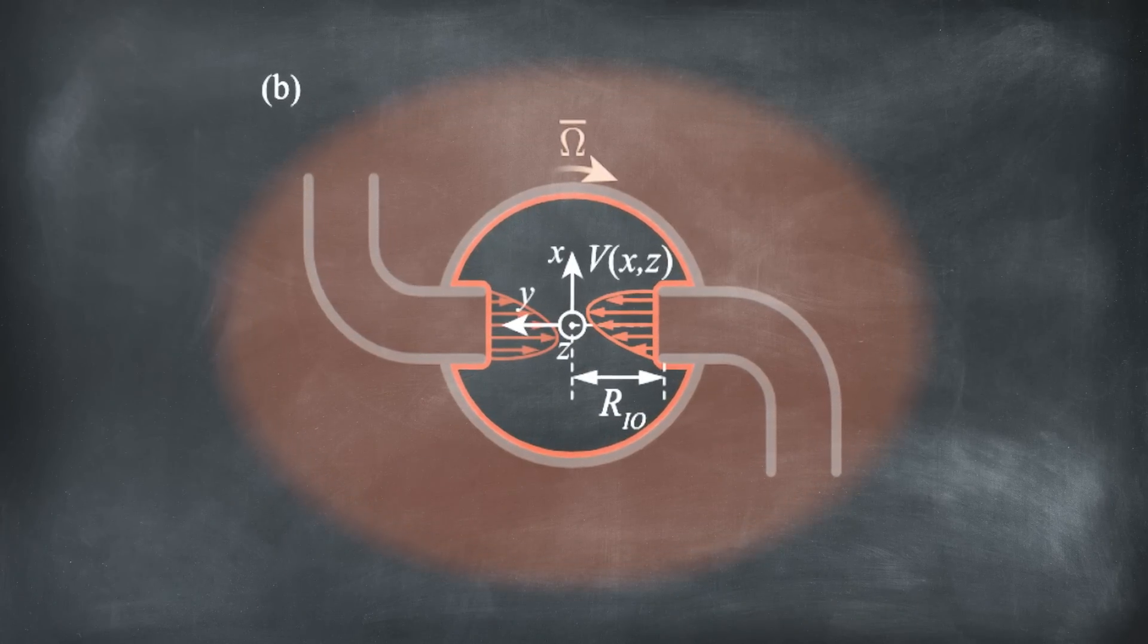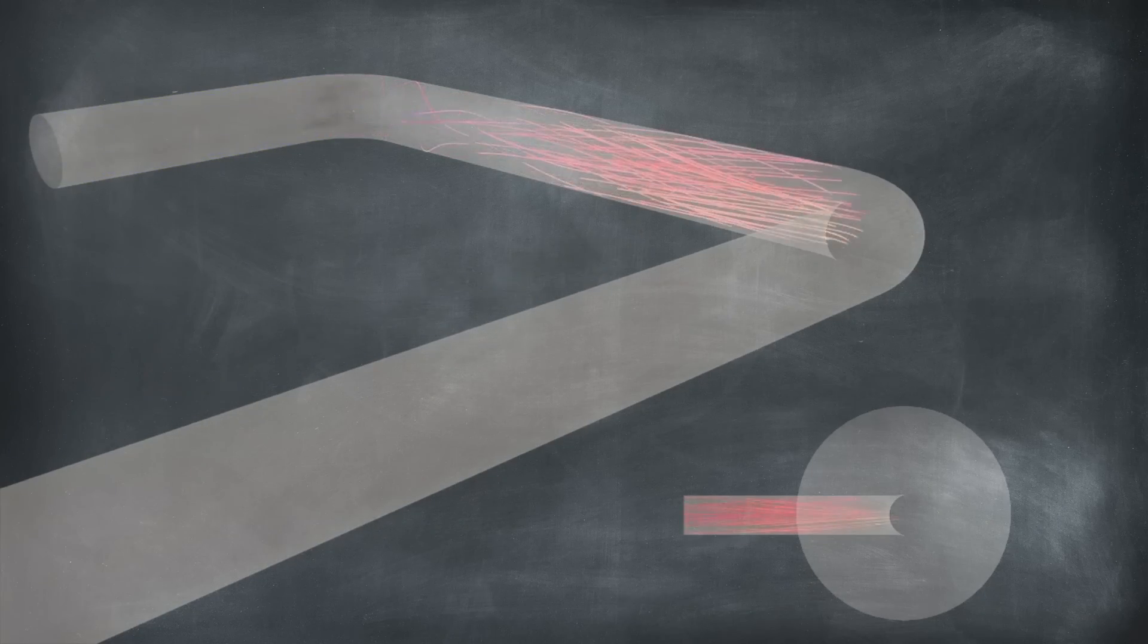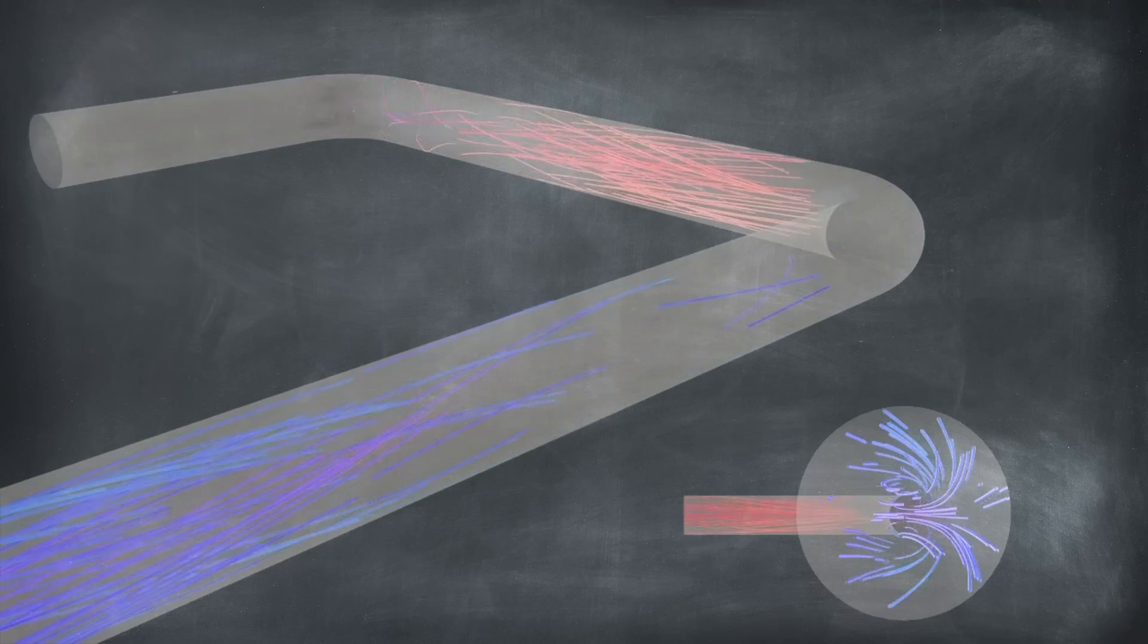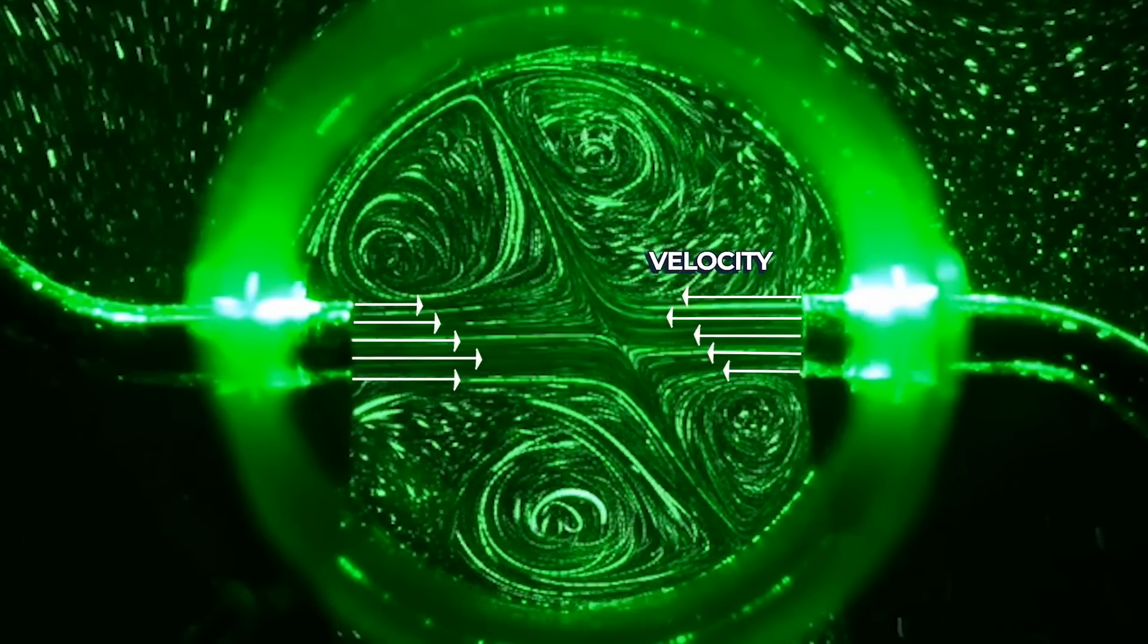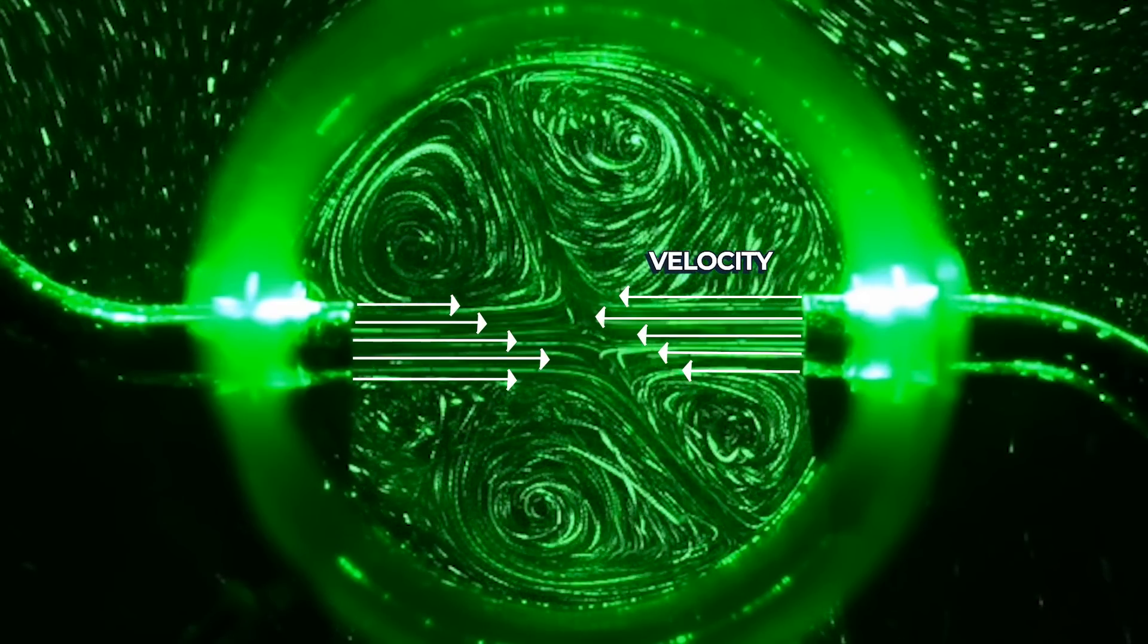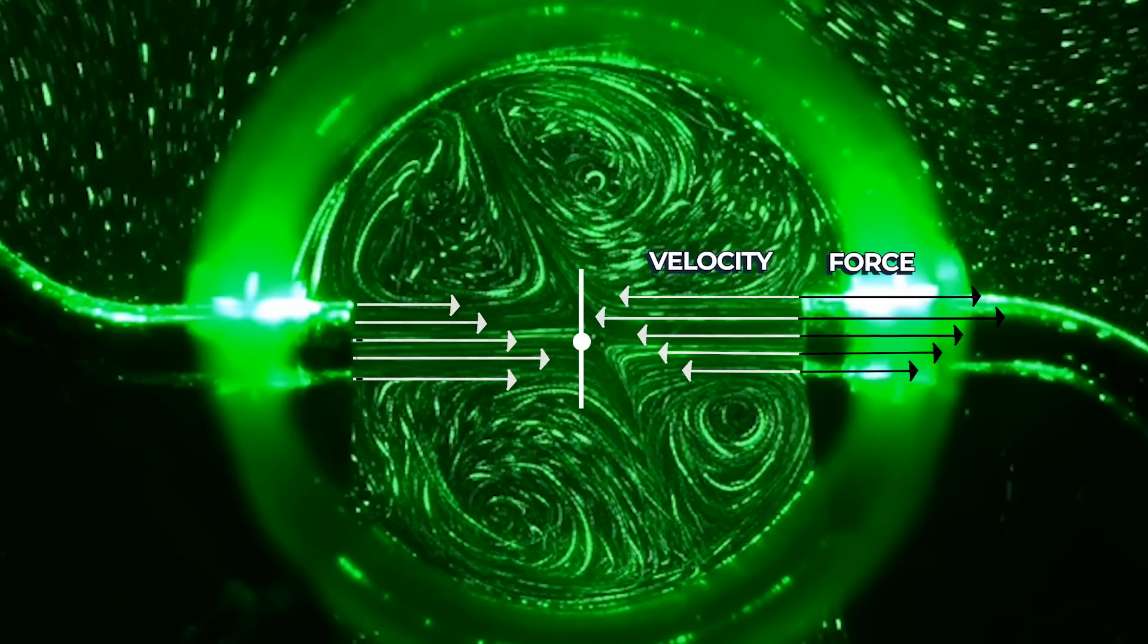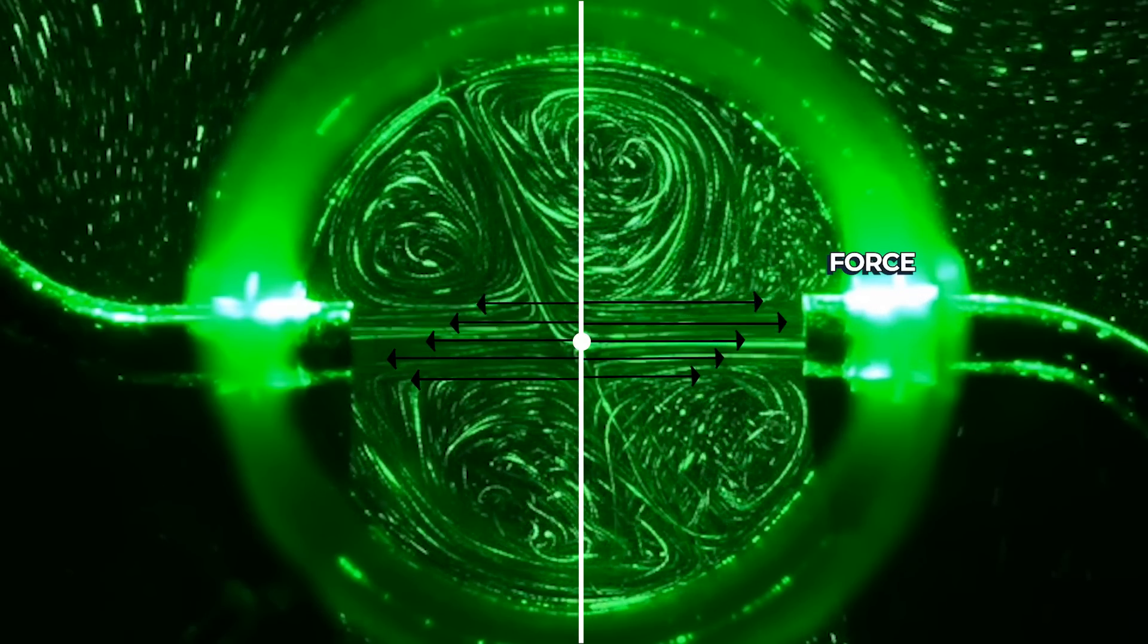Flow within thin curved pipes has long been studied under the name of the Dean flow problem. It's known that centrifugal effects lead to higher velocity flows on the edges of tubes, and this looks to be exactly what is happening here. Having the highest velocity flows off-center means that the inward jets each contribute force at an offset from the central axis of rotation. This is a rotational torque on the system.